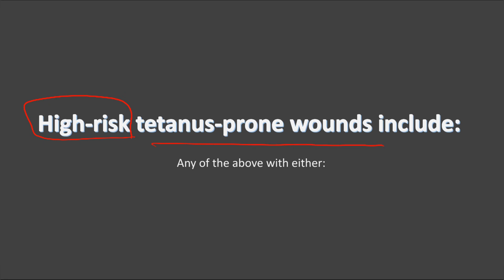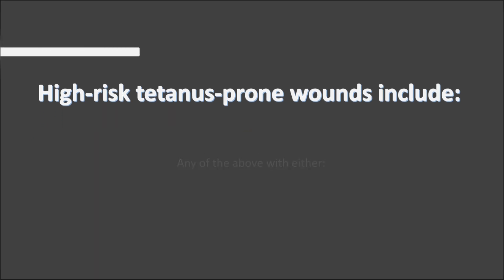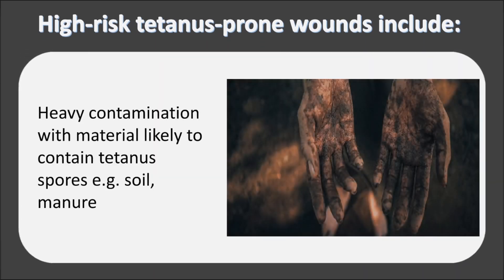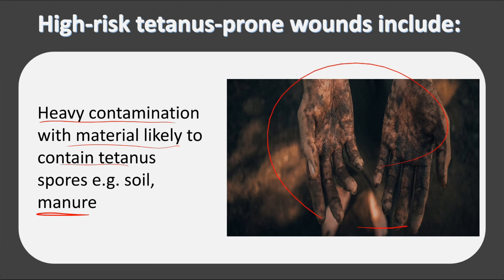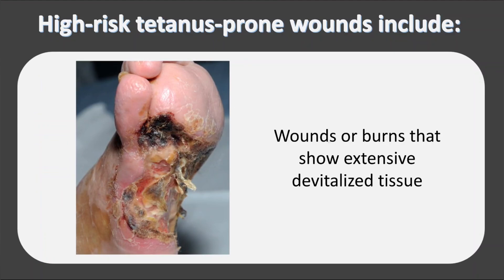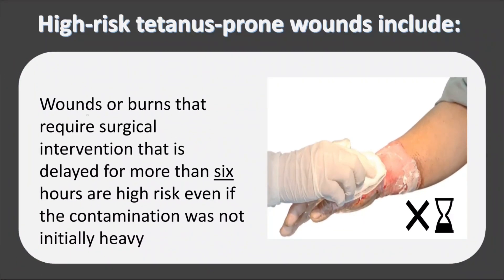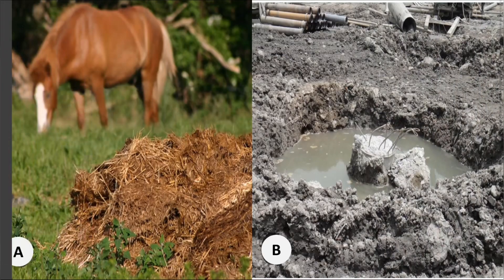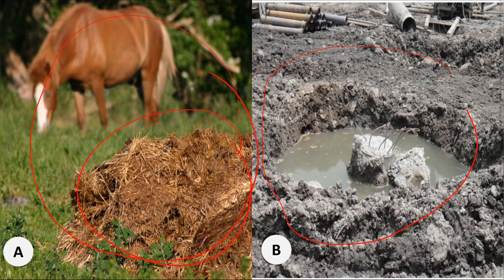What do we mean by high-risk tetanus-prone wounds? Any of the above wounds, plus: first, if the patient has heavy contamination with material likely containing tetanus, for example manure. Second, wounds showing extensive devitalized tissue — these extensive devitalized tissues make the patient prone to high-risk tetanus. Third, wounds that require surgical intervention, for example suturing, but are delayed more than six hours — these are high risk even if the contamination was initially simple.